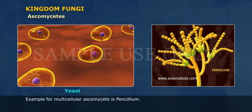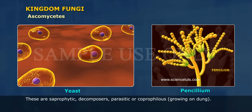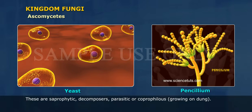An example of multicellular ascomycetes is Penicillium. These are saprophytic, decomposers, parasitic, or coprophyllous, growing on dung.